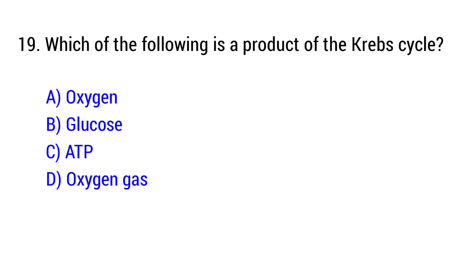Question number 19. Which of the following is a product of the Krebs cycle? The right answer is option C, ATP.